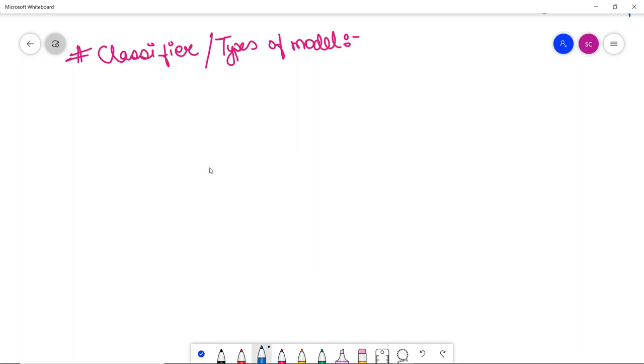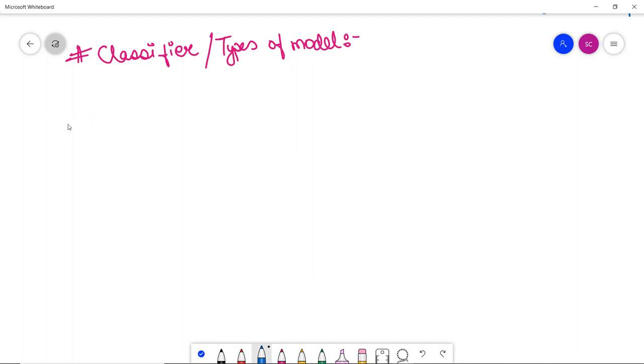There are three types of Naive Bayes model or classifier. The first is Gaussian, second we have Multinomial, and third we have Bernoulli.